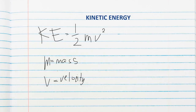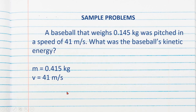Here is the formula for kinetic energy: kinetic energy is one half mv squared, where m is the mass and v is the velocity. One example is a baseball that weighs 0.415 kilogram was pitched at a speed of 41 meters per second. What was the baseball's kinetic energy?